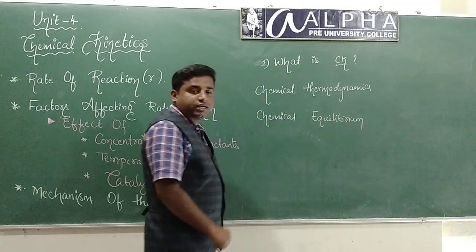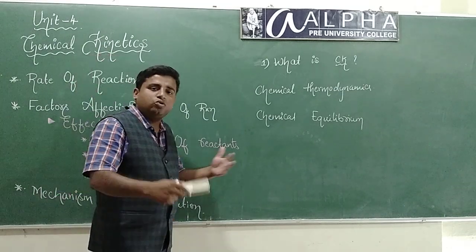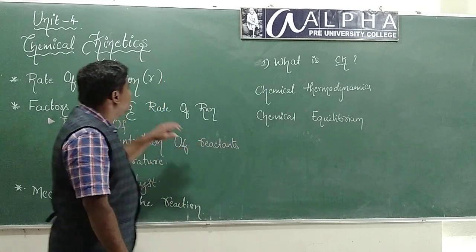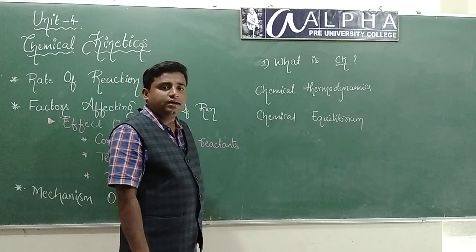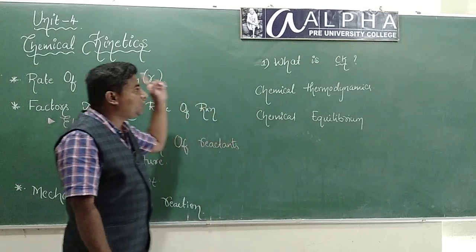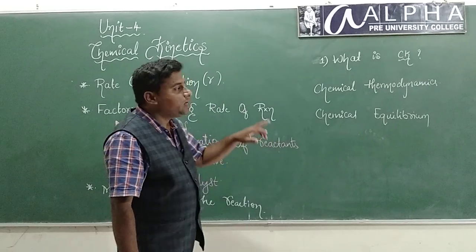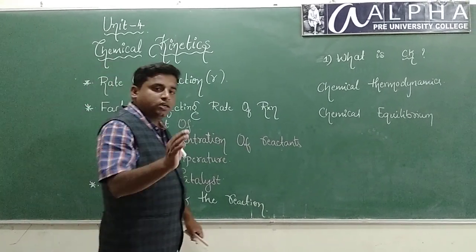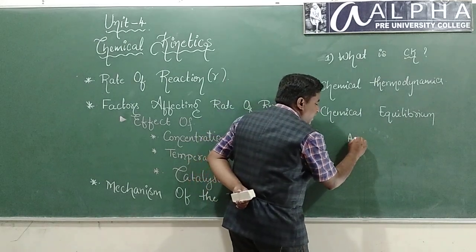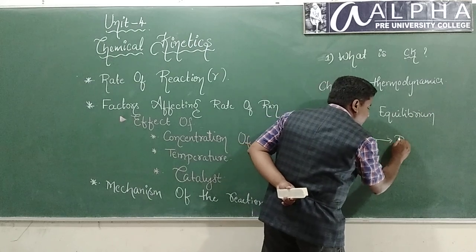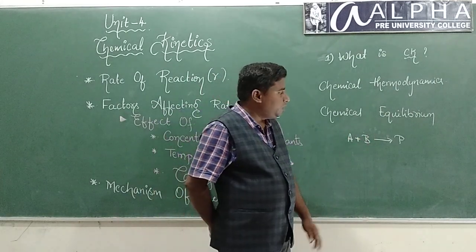Chemical kinetics is just the continuation of chemical thermodynamics and chemical equilibrium. How are these two chapters connected to chemical kinetics? In order to understand this, let me consider a general reaction — a typical reaction wherein A reacts with B to form the products.